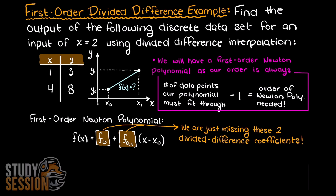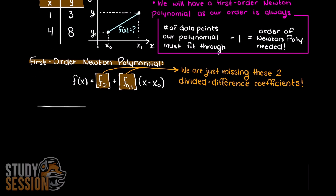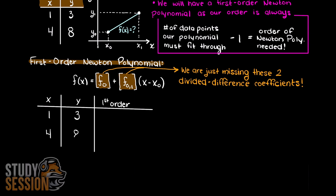But how do we find these coefficients for our Newton polynomial? Well, that is the magic of this method — we can simply use our divided difference table. To set up a divided difference table of the first order, we will create the column headers x, y, and then we'll call it first order. Then let's translate our discrete data supplied to us in this table under the x and y columns.